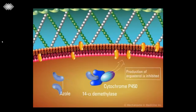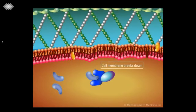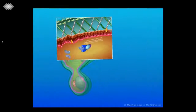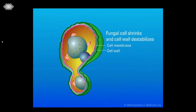In turn, this results in an accumulation of 14-alpha-methylsterols and a depletion of ergosterol in the cell membrane. The lack of ergosterol in the fungal cell membrane makes it very unstable. Eventually, the cell membrane begins to break down and the fungal organism dies.